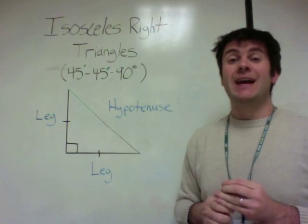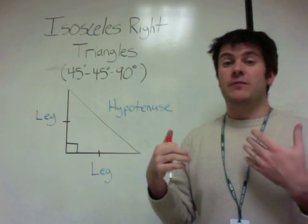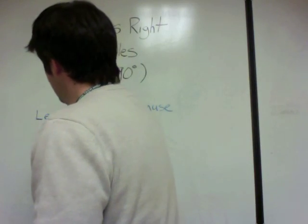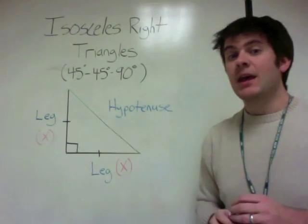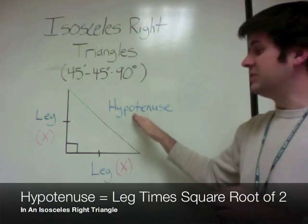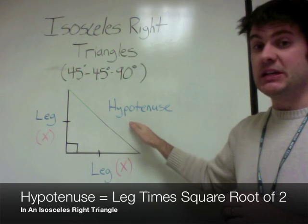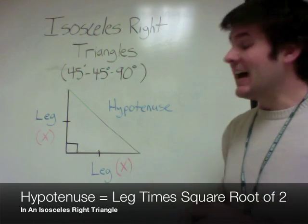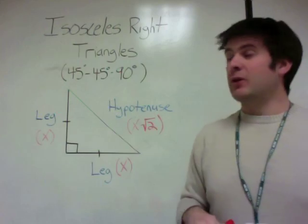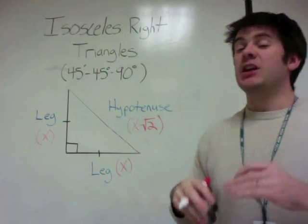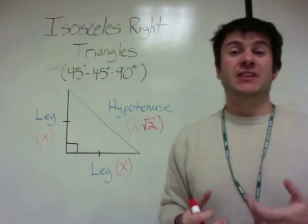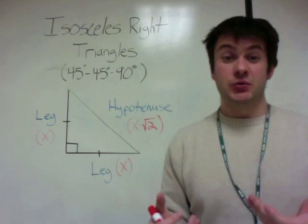The legs both have the same length, so we'll give that a value of x. In an isosceles right triangle, the hypotenuse is always going to be the length of the leg times the square root of 2. So the leg and the hypotenuse are always fixed with that ratio. Let's take a look at a couple of example problems to illustrate how to use this property.